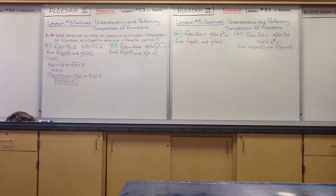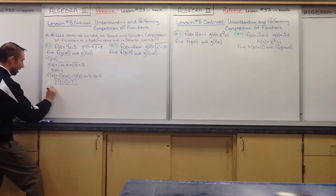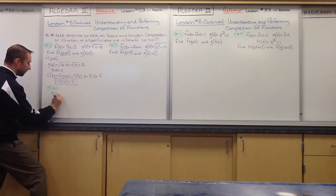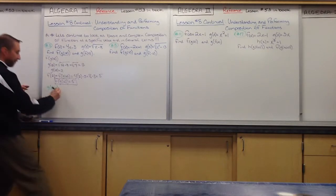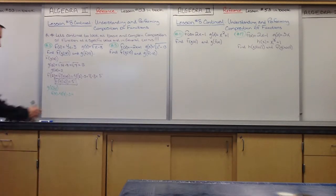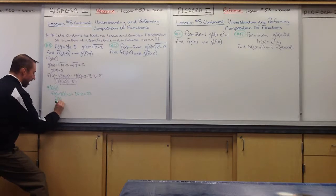Does that make sense? Hopefully that makes more sense than it did on Friday. Now the second part: we have to do g(f(9)). In order to do g(f(9)), I need to first find out what f(9) is — the innermost function. I need to evaluate the innermost function at 9 instead of x. So we plug 9 into f(x) and get 4 times 9 minus 3. 4 times 9 is 36, minus 3 is 33. So my f(9) is equal to 33.